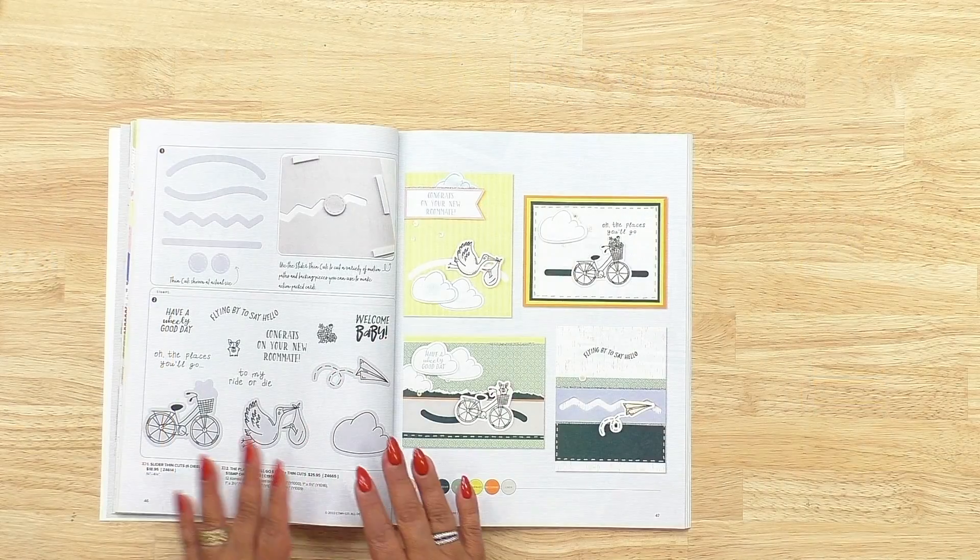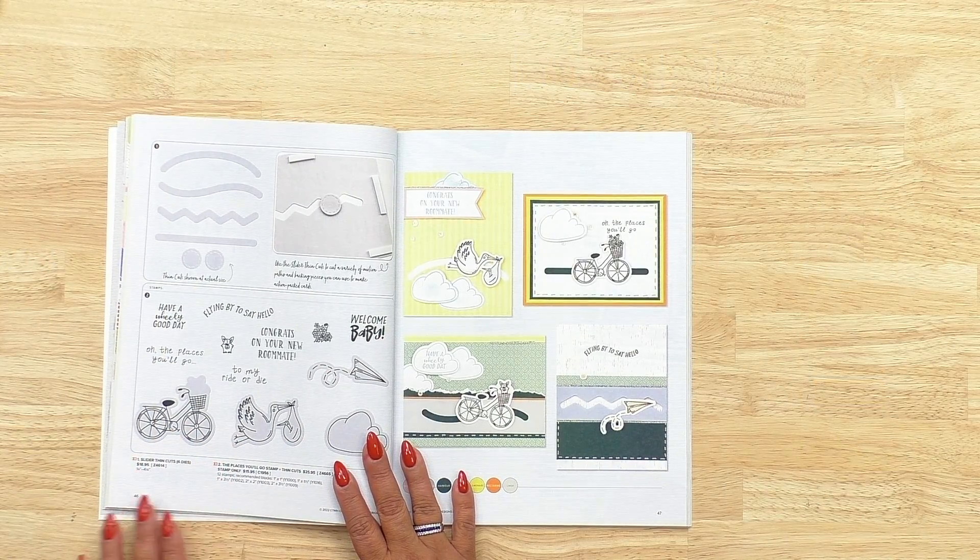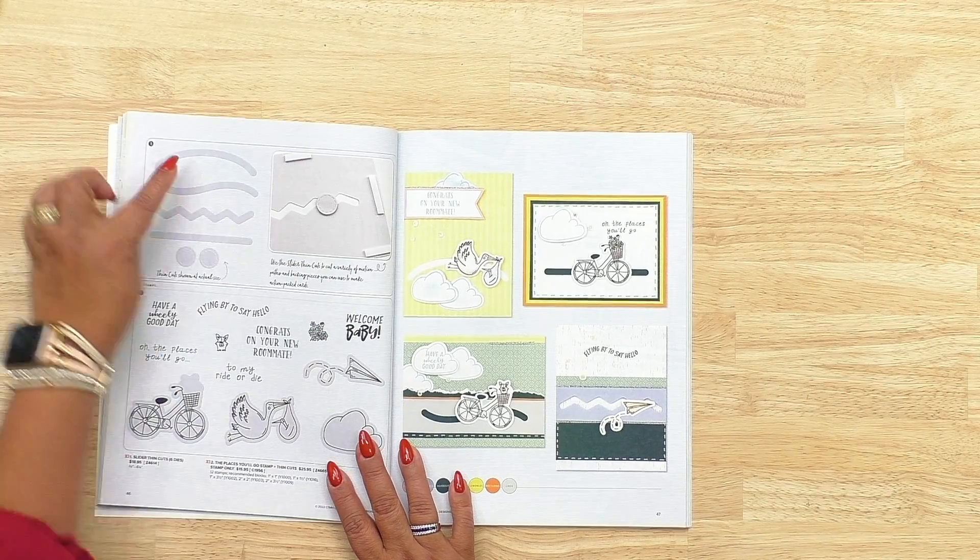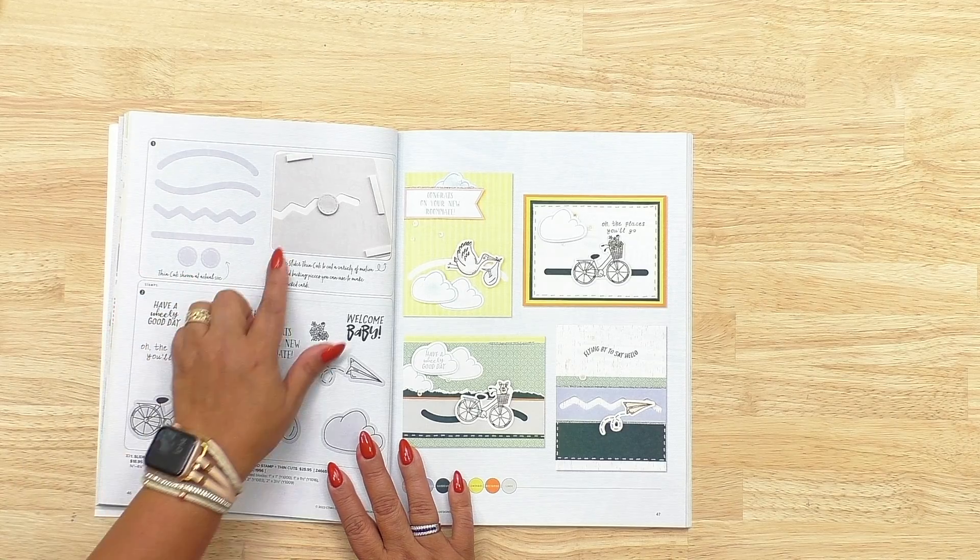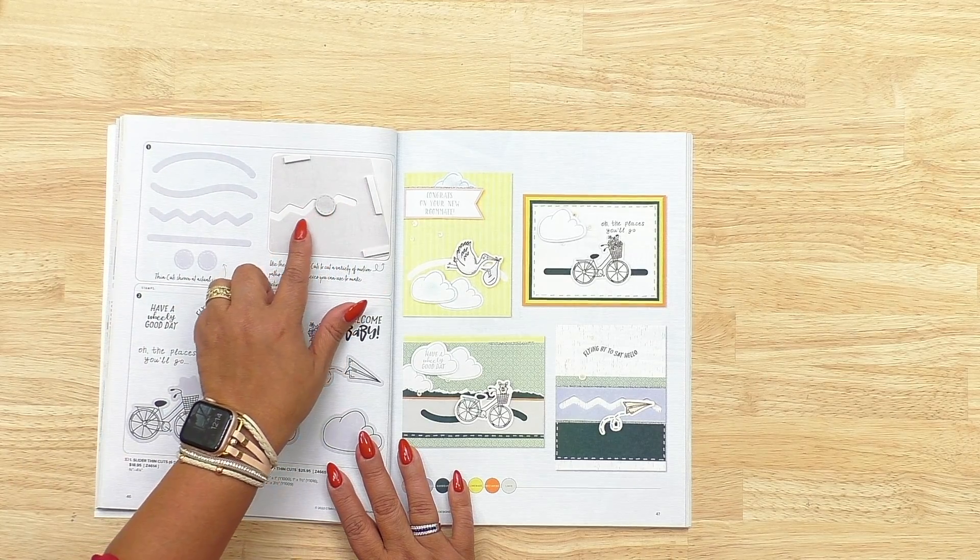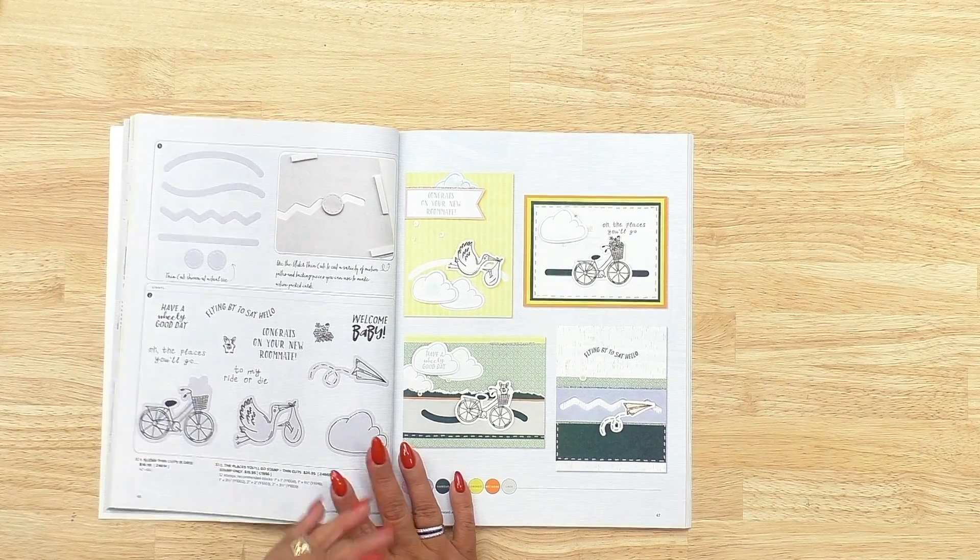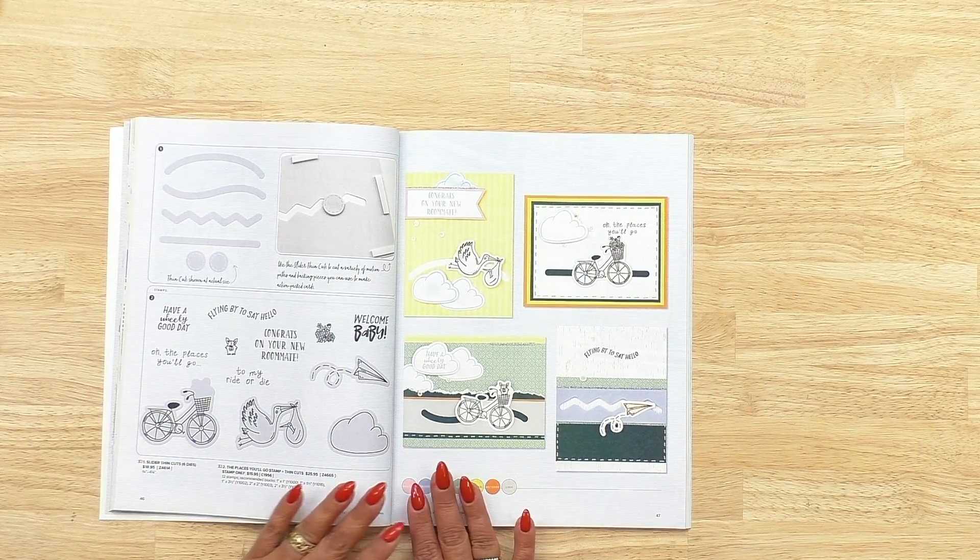We have just introduced in our core catalog these fun and awesome metal dies called thin cuts. It's here inside of our core catalog on page 46. You can see we have these different types of sliders, different designs that you can create what is known as a penny card. But this is of course the Close to My Heart style.